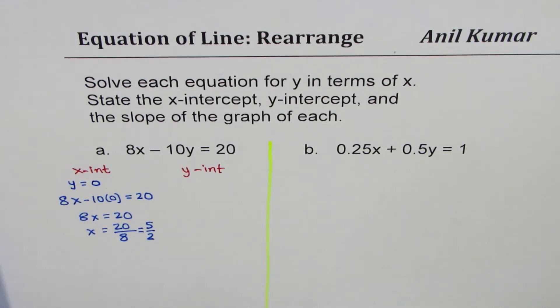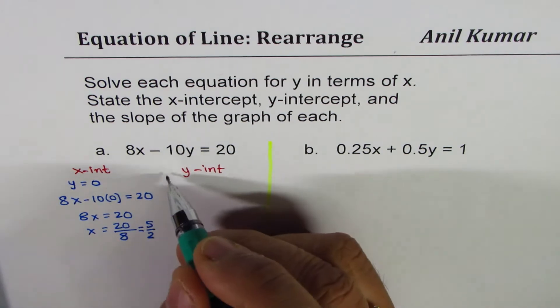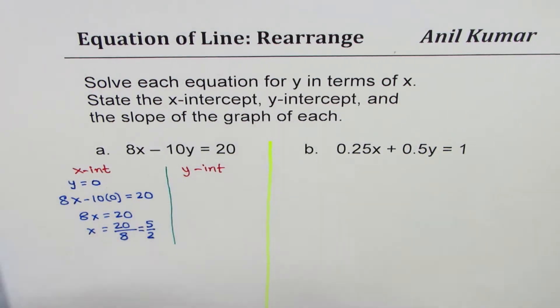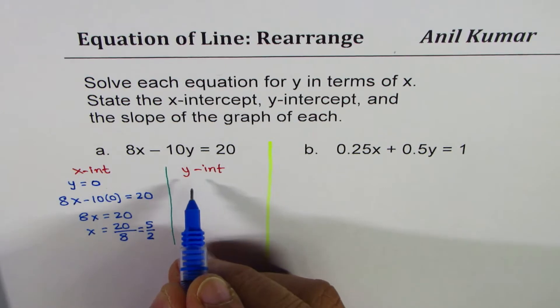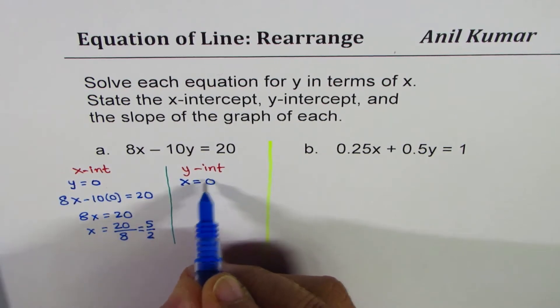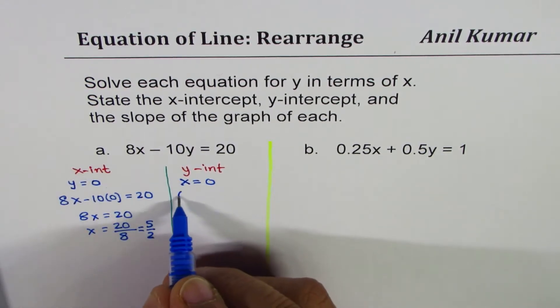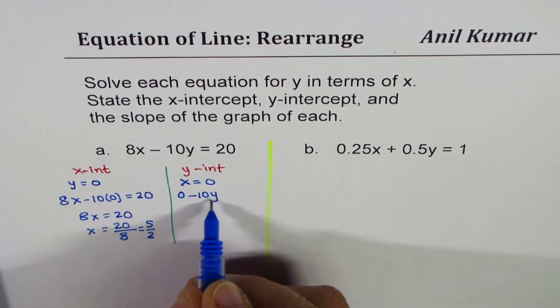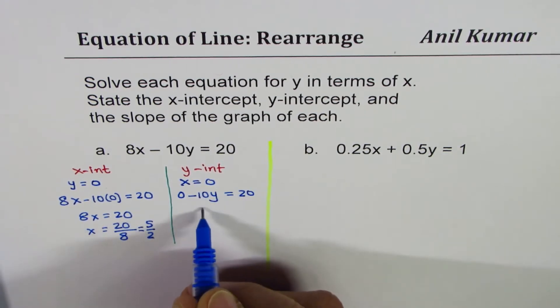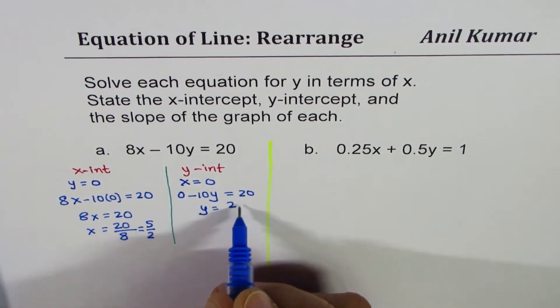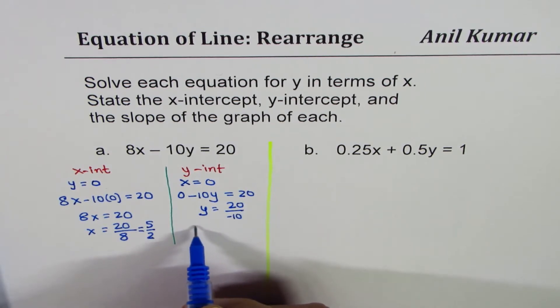Now let us find the y-intercept. What is y-intercept? y-intercept is a point where the graph crosses y-axis, so at that point x equals 0. If I substitute 0 here, I get 0 minus 10y equals 20, or y equals 20 divided by minus 10, and so we get y equals minus 2.